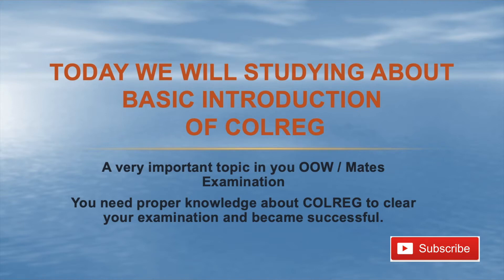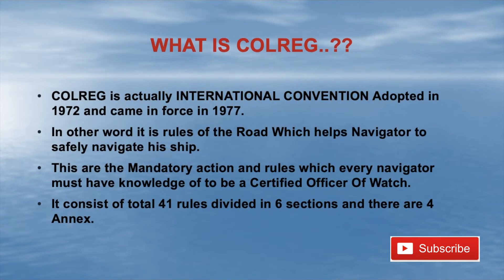COLREGS is an international convention which was adopted in 1972 and came into force in 1977. In other words, we also call it the rules of the road. It provides information and rules which a seafarer should follow on board to safely navigate a vessel. It is a universal rule.